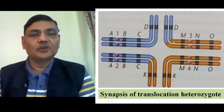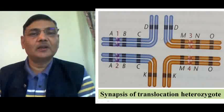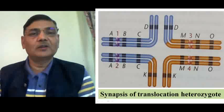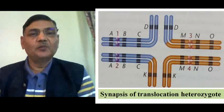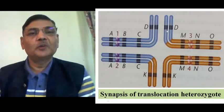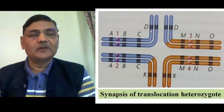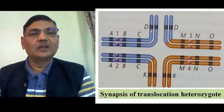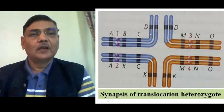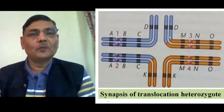After this pairing, the segregation of chromosomes will occur, as these chromosomes must be distributed into gametes. There are three different kinds of segregation patterns: one where adjacent chromatids go together, and another where alternate segregation of chromatids occurs.